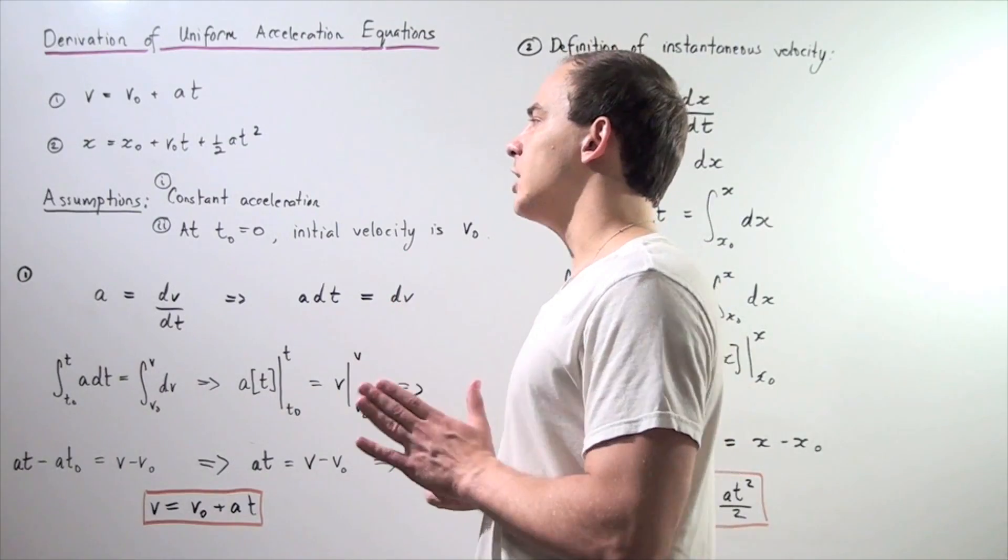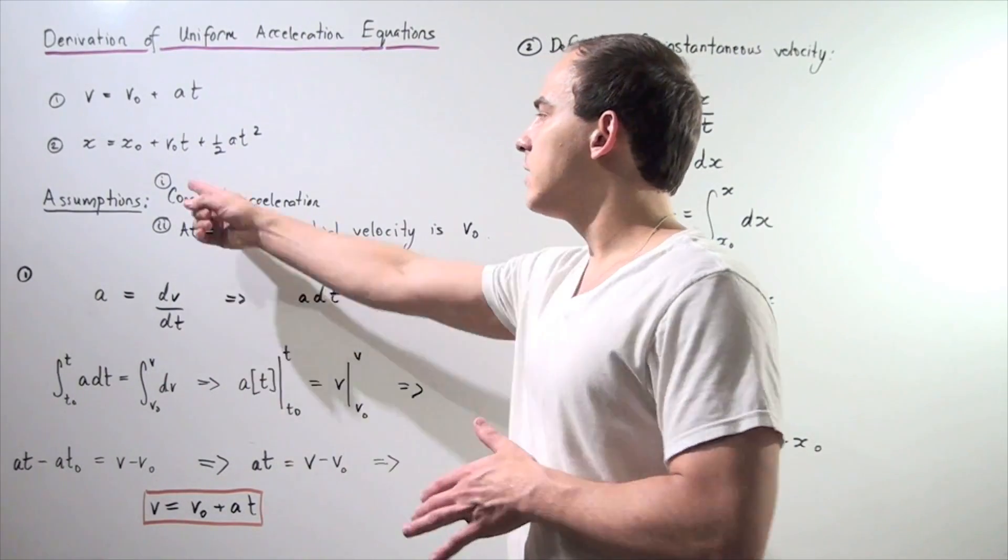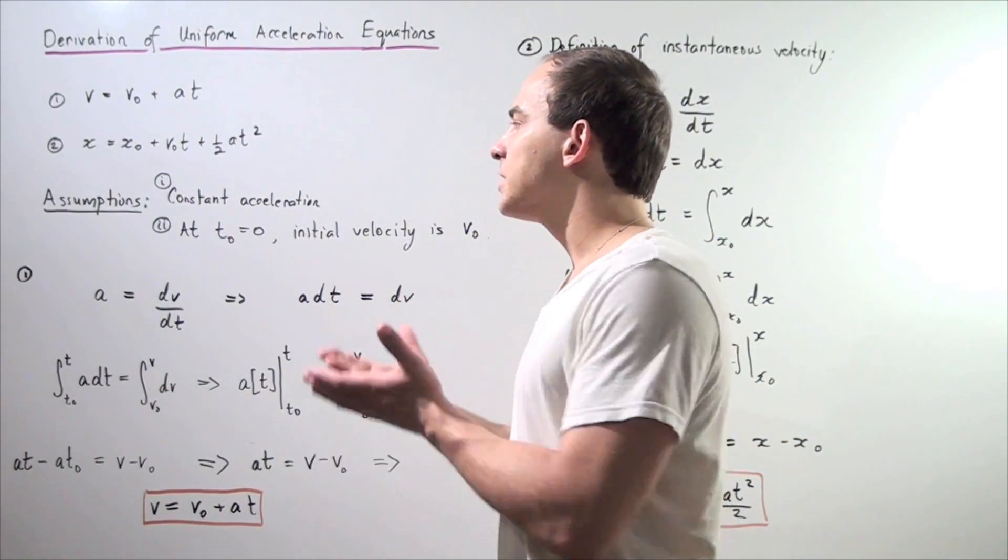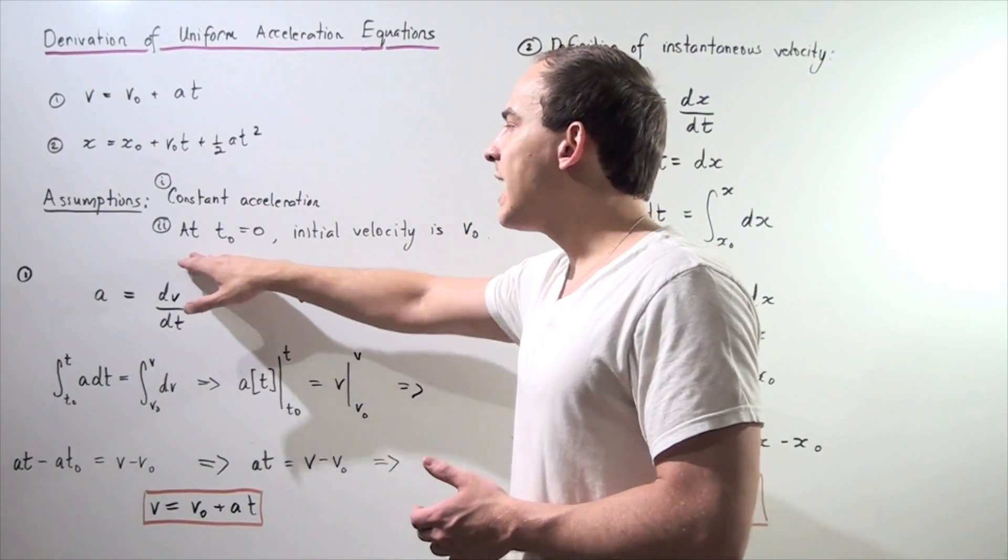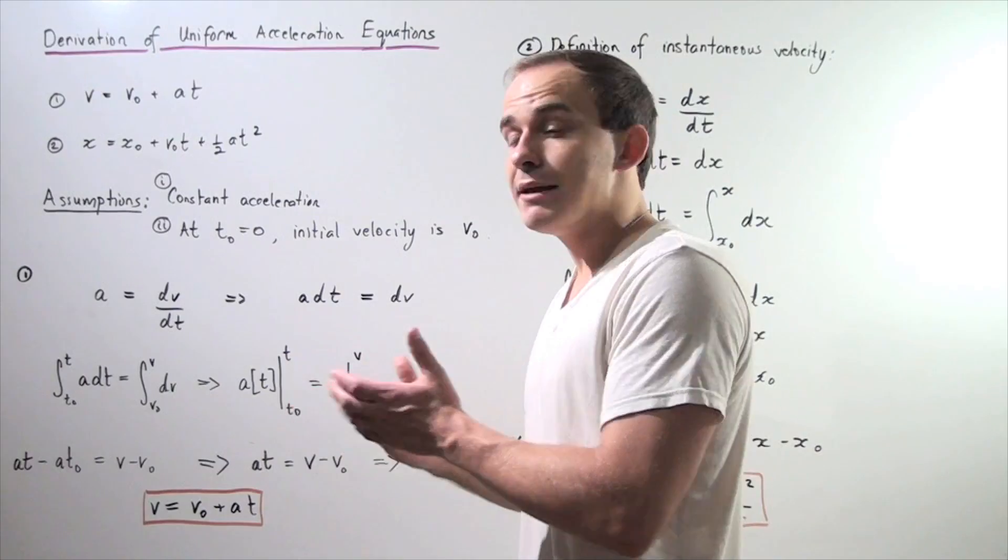Let's look at the following two assumptions. Assumption number one, our motion is under constant acceleration. And assumption number two, at time naught, at our initial time equals zero,